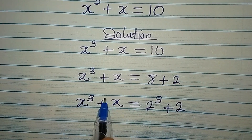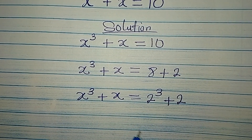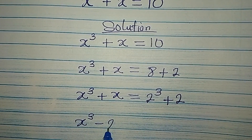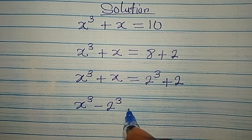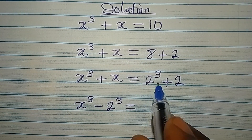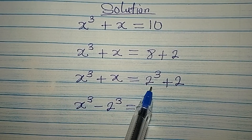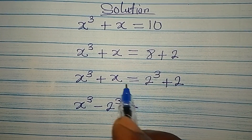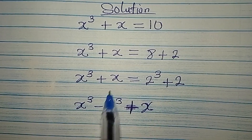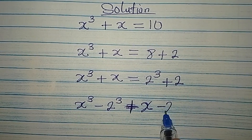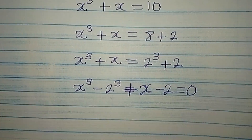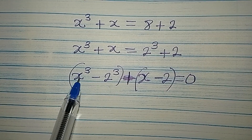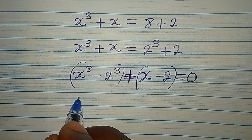But we want to check if we are going to have more solutions. From here, let's bring terms together: we have x to the power of 3 minus 2 to the power of 3. I brought these together, so I also bring the remaining terms together, giving plus x minus 2, and we equate to zero. Now we can group this and deal with it — here we have a difference of two cubes.